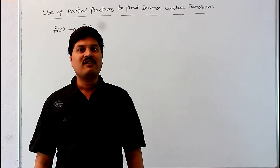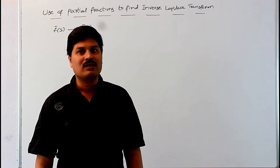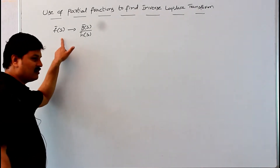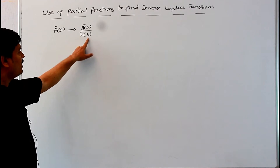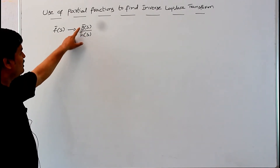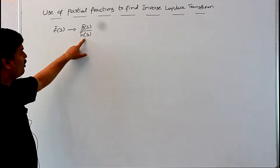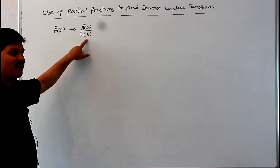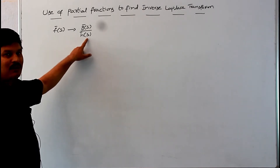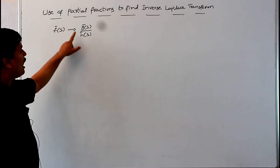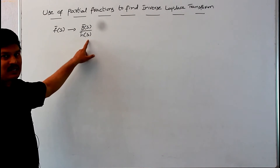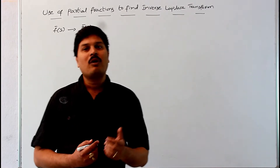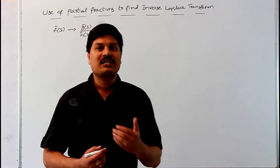Now we are going to learn the partial fraction method in inverse Laplace transforms. If the given function f-bar of s is in the form g-bar of s divided by h-bar of s, where g-bar of s and h-bar of s are polynomials in s, then f of t — that is, the inverse Laplace of f-bar of s — can be obtained by resolving f-bar of s into partial fractions and manipulating term by term. Now we will see the problems based on the partial fraction method.